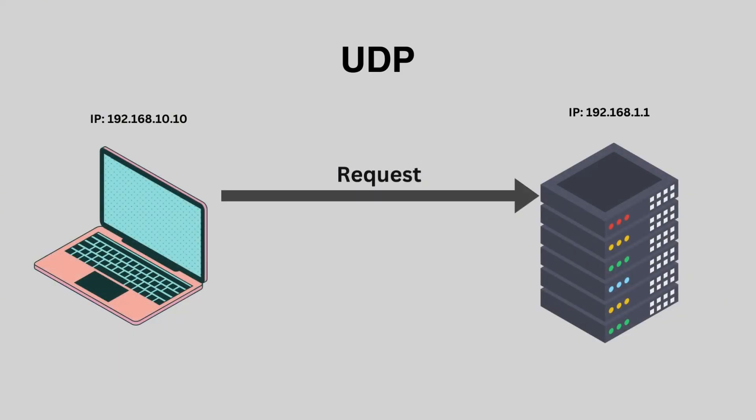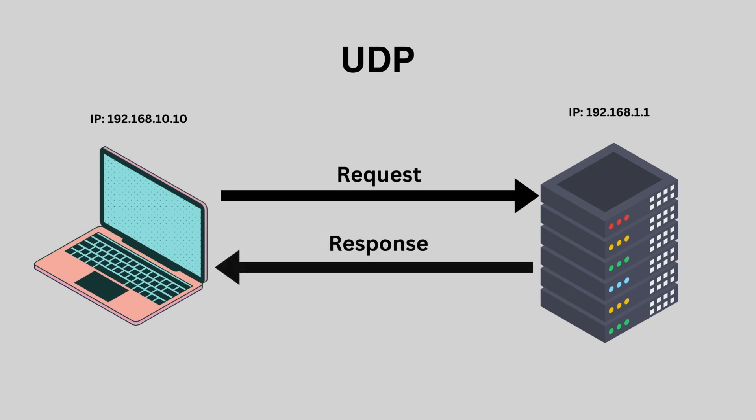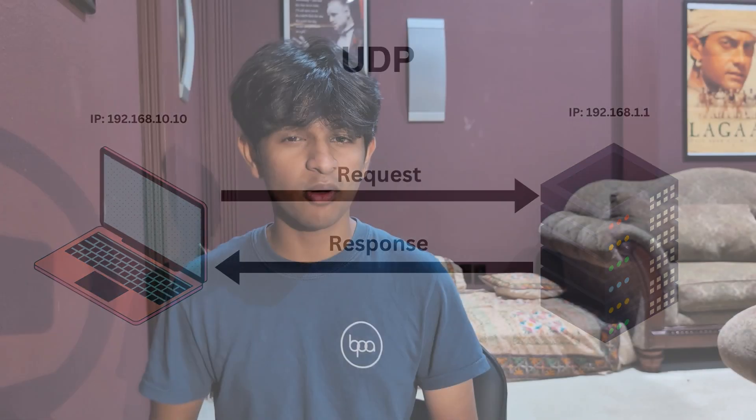On the other hand, UDP is much more efficient, not employing a three-way handshake. It does not establish a prior connection, meaning a sender can simply send a packet to a recipient without any prior setup, leading to unreliable delivery.